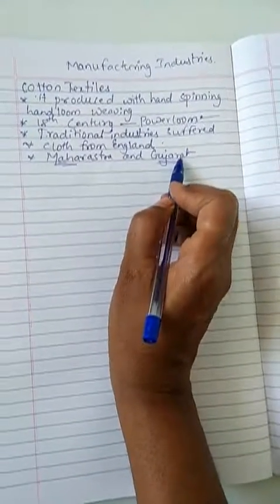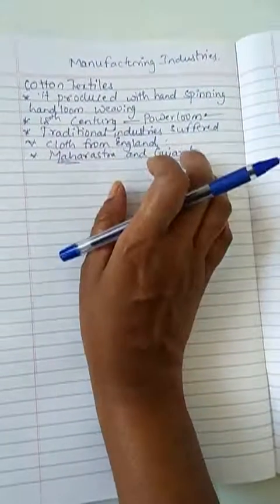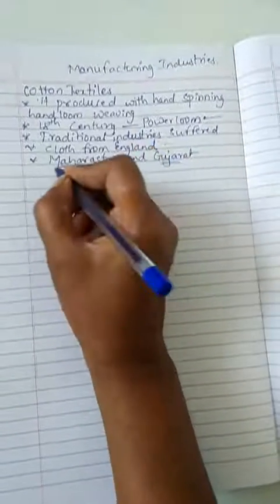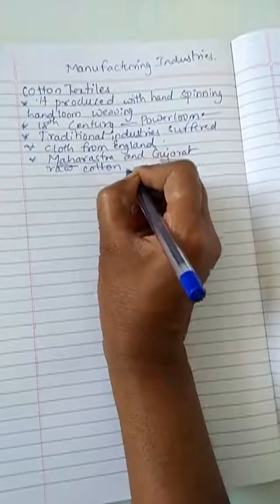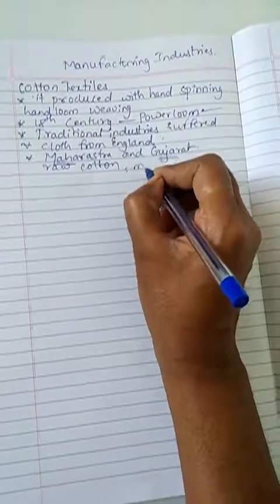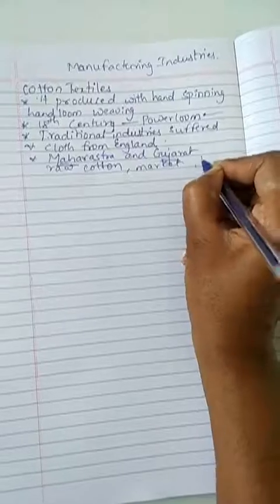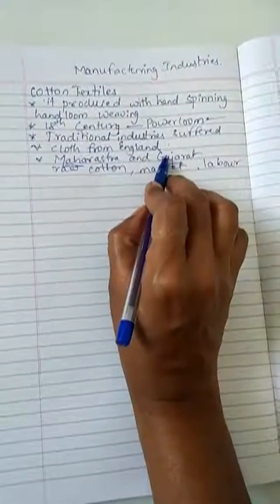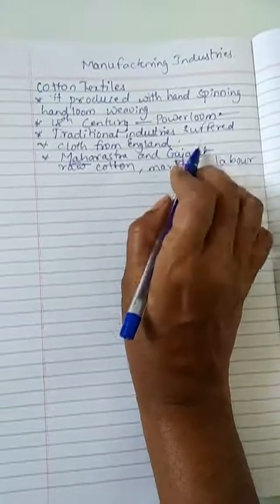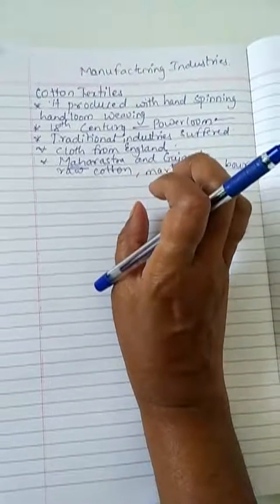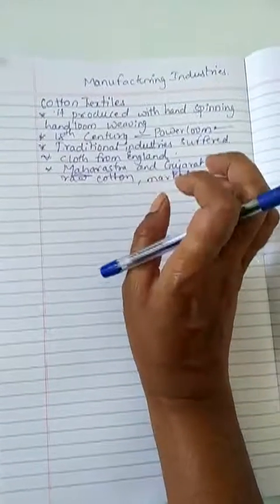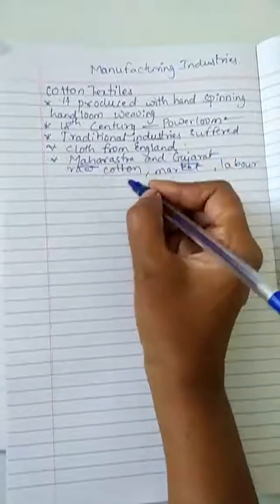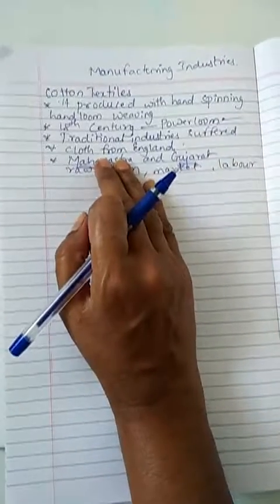Maharashtra and Gujarat are very important where raw cotton is available, market is available, as well as skilled labor. These two places are also very close to port lands and waterways, which are easily available.